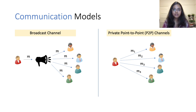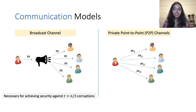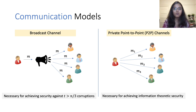Most MPC protocols considered in literature are designed over two kinds of communication channels: broadcast and point-to-point. A broadcast channel allows a sender to send the same message to multiple receivers, while point-to-point channels enable parties to exchange private messages amongst each other. These communication models play a fundamental role in deciding what kind of security can be achieved and under what assumptions. For instance, a broadcast channel is necessary for achieving security when the number of corrupt parties are greater than one-third fraction of the total parties, while point-to-point channels are necessary for achieving information-theoretic security.